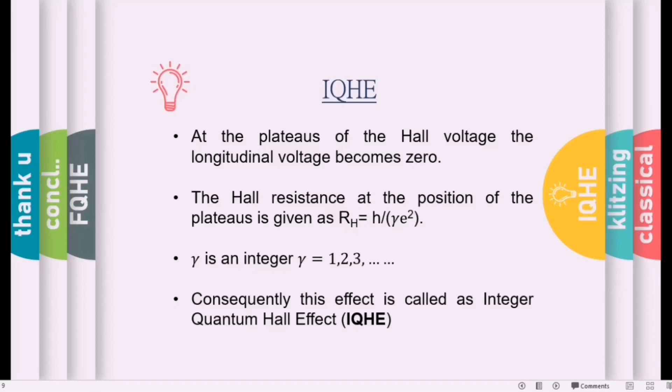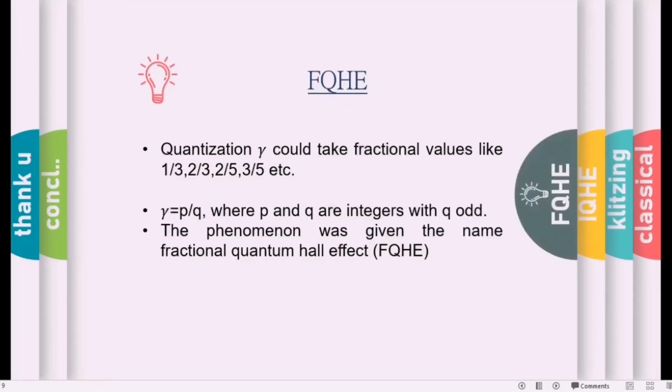Consequently, this effect is called integer quantum Hall effect, that is IQHE. Two years after the discovery of the integer quantum Hall effect, it was found that quantization γ could take fractional values like 1/3, 2/3, 2/5, 3/5, etc., where γ equals P divided by Q, where P and Q are integers with Q as odd number. So this phenomenon was given the name fractional quantum Hall effect, FQHE. So there are two kinds of quantum Hall effect: integer quantum Hall effect (IQHE) and fractional quantum Hall effect (FQHE).